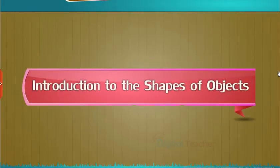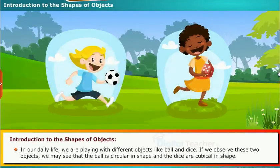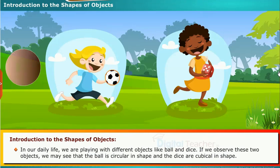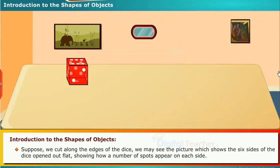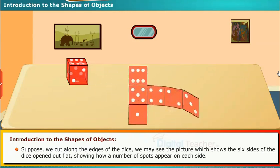Introduction to the shapes of objects: In our daily life we are playing with different objects like ball and dice. If we observe these two objects we may see that the ball is circular in shape and the dice is cubical in shape. Suppose we cut along the edges of the dice, we may see the picture which shows the six sides of the dice opened out flat, showing how a number of spots appear on each side.